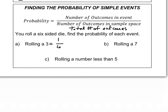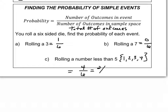For rolling a seven: again, there are six possibilities, but there are no sevens on a six-sided die, so you have a zero out of six chance — impossible. For rolling a number less than five: the numbers less than five are 1, 2, 3, and 4 — four total possibilities out of six. Reducing that fraction by two gives you two-thirds. So we've started finding some simple probabilities.